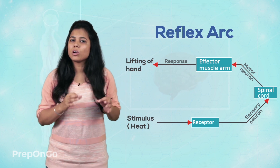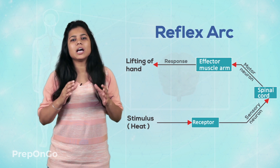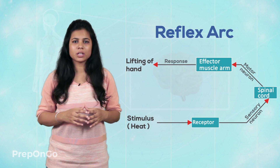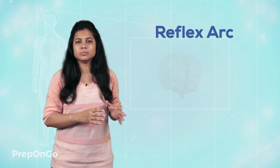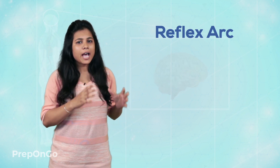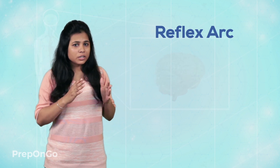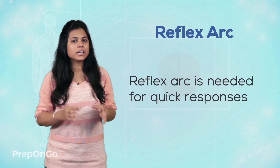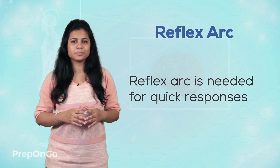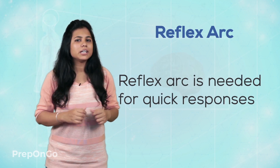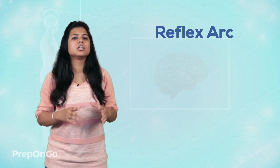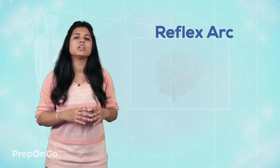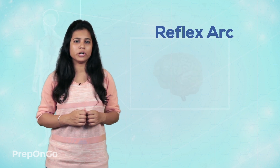These signals also reach the brain, but a little late. So we can conclude that the nervous system is complex and efficient, but the reflex arc is needed for quick responses. In the next video, we will see the human brain and how it functions for the control and coordination of the human body. See you in the next video.